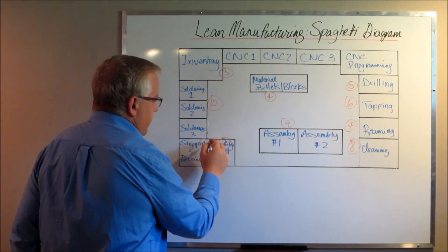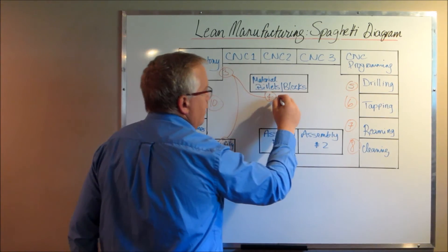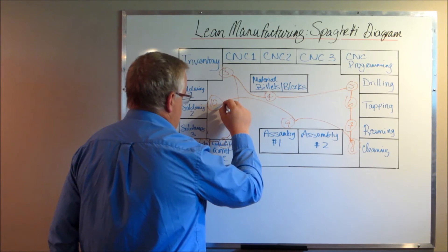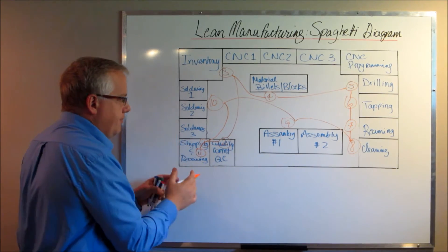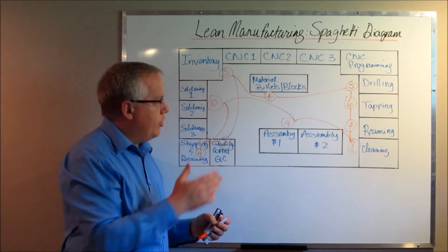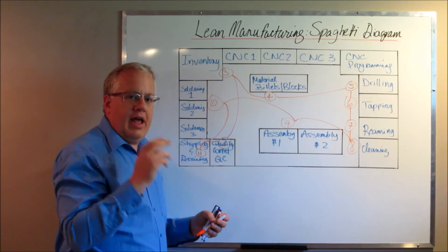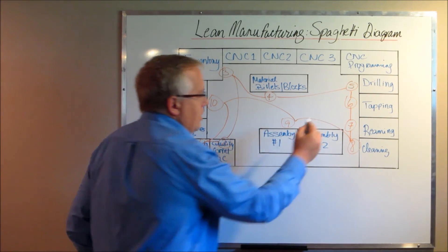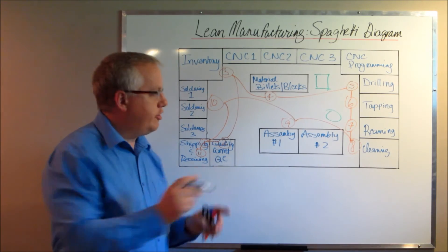Now draw a continuous line from one to two, two to three, three to four, and so on through every step. The reason this is called a spaghetti diagram is because you draw exactly how work flows through the shop floor. If you come across a pillar or a beam, don't draw the line through it — draw it around the obstacle.